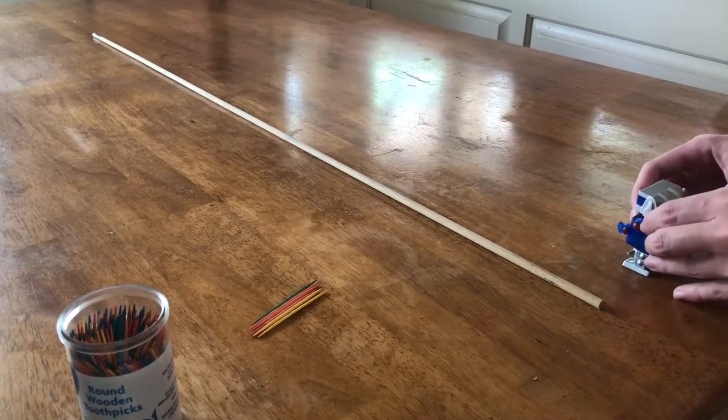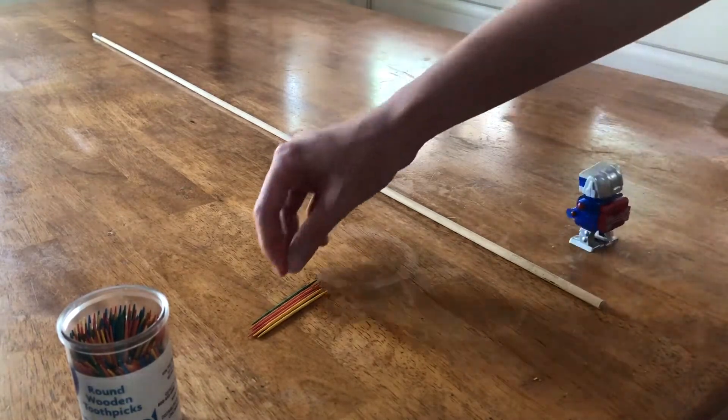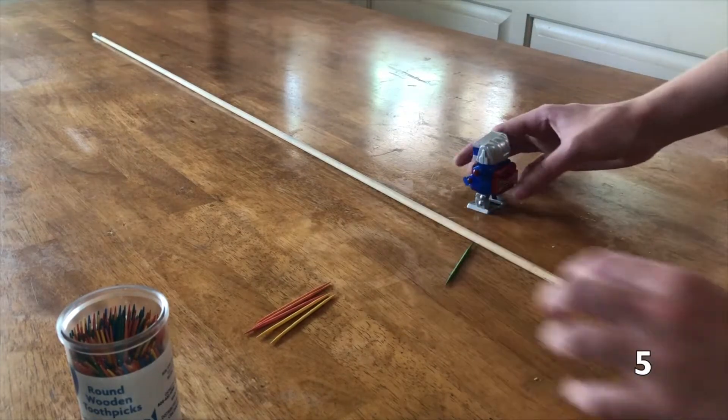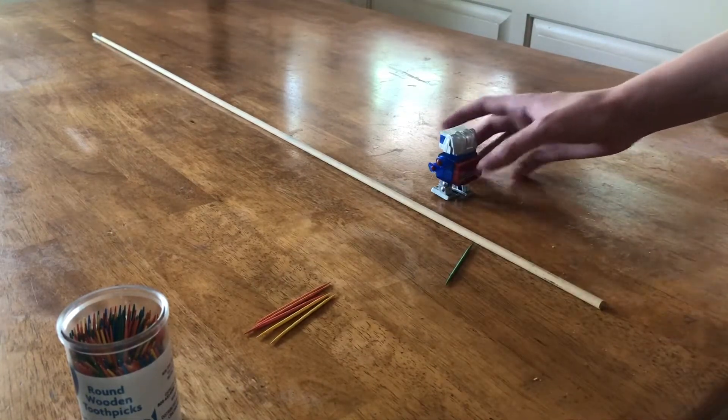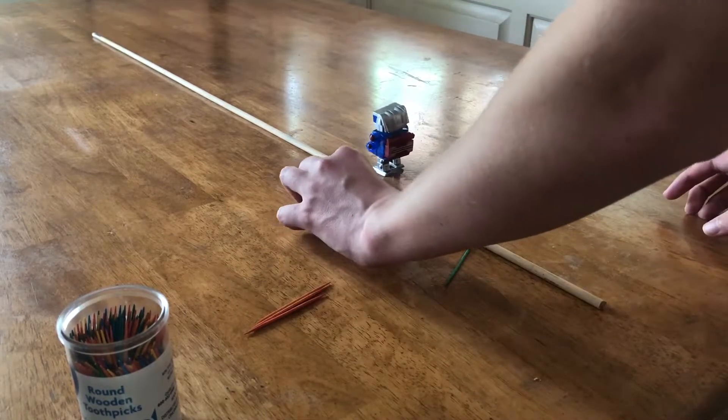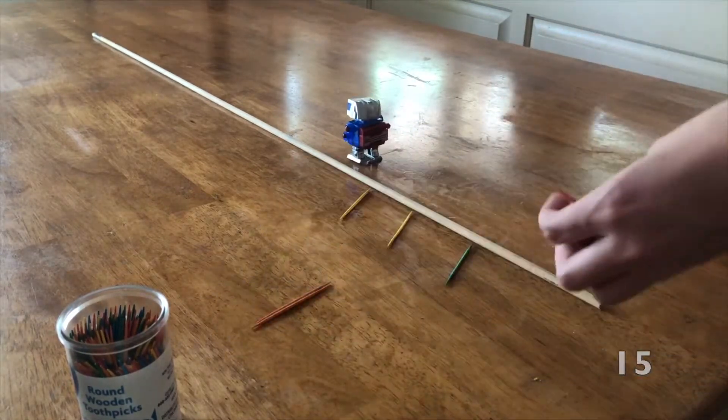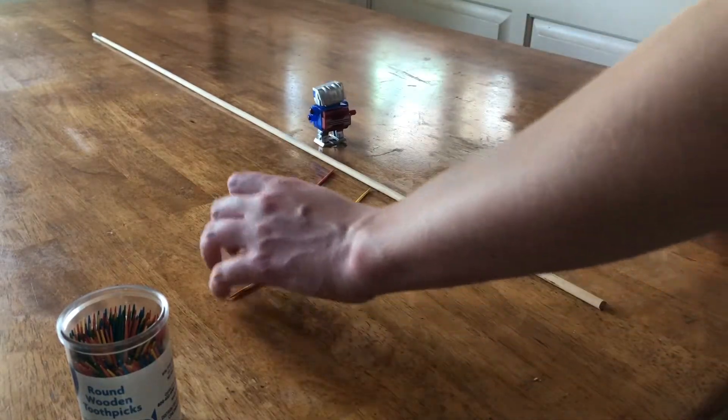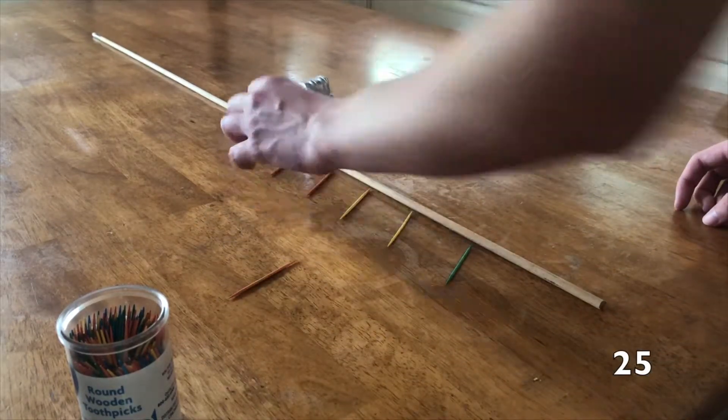This time, students will collect some data that will be used to make a graph. Have one person call out five second intervals while a student lays down a toothpick next to the ruler for every time interval. They will do this for 30 seconds and then measure the distance between toothpicks. They will record the distances and the time and make a time versus distance graph.